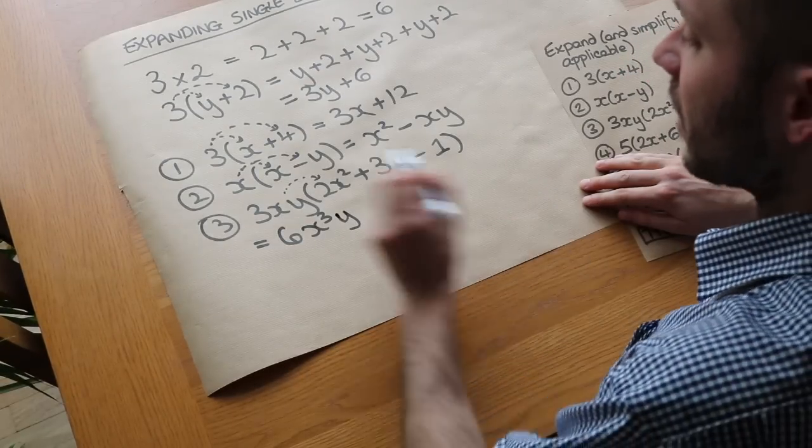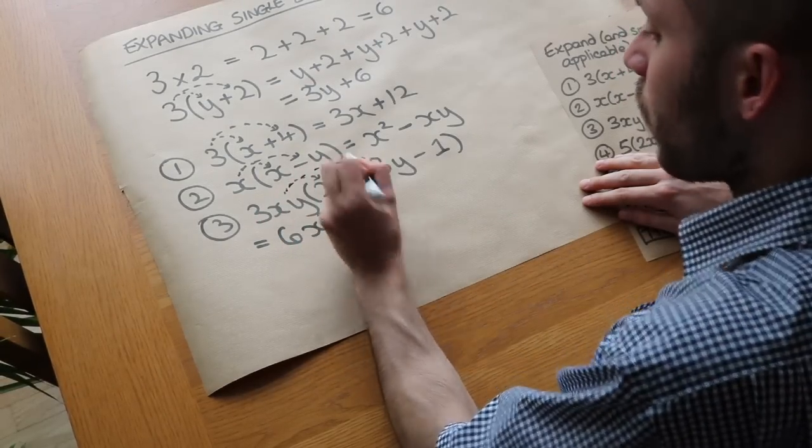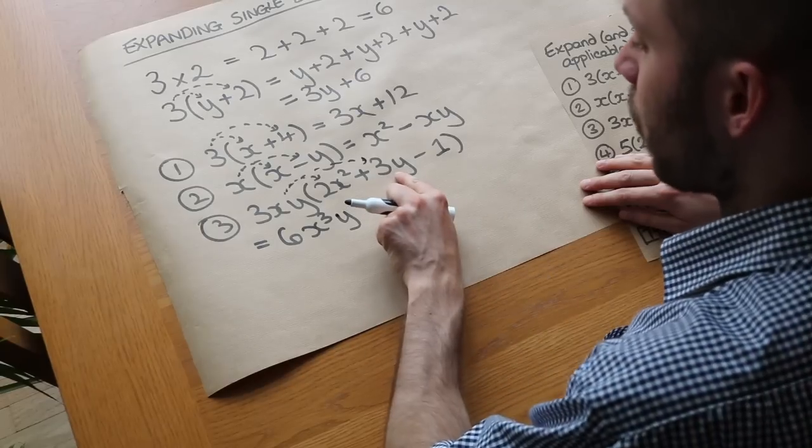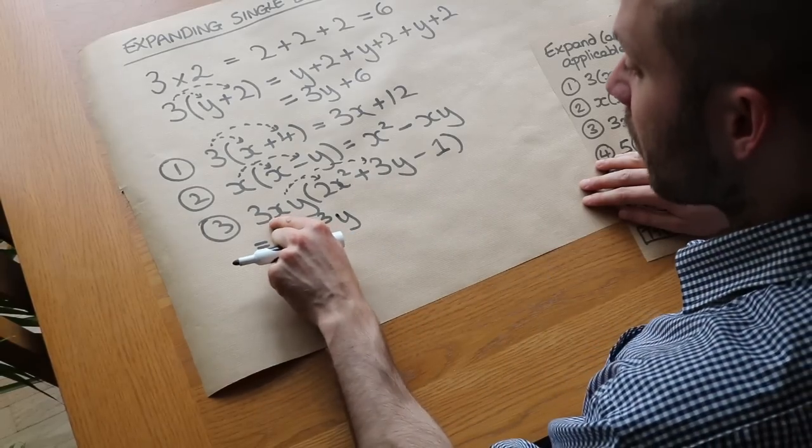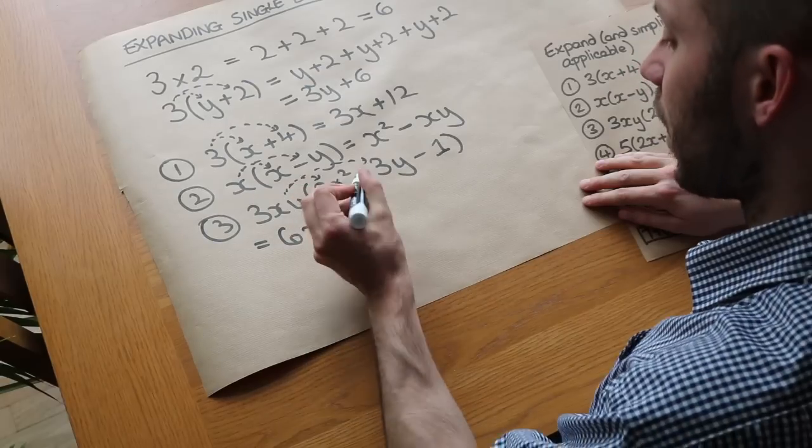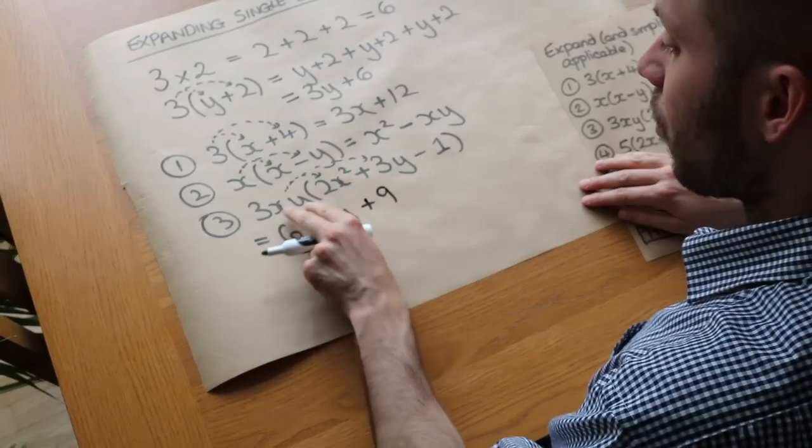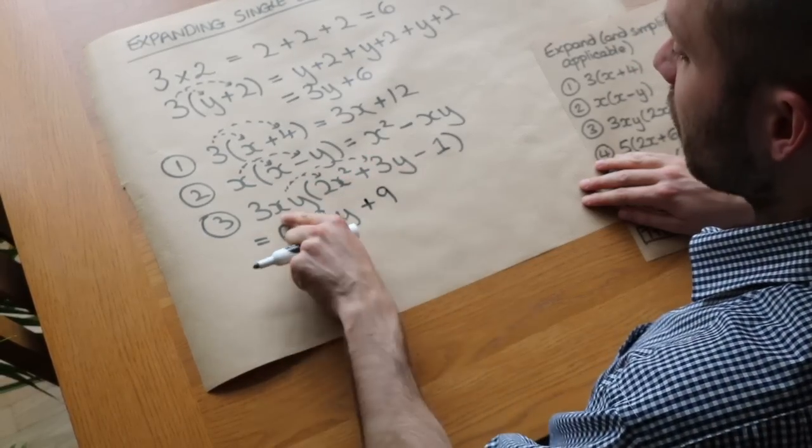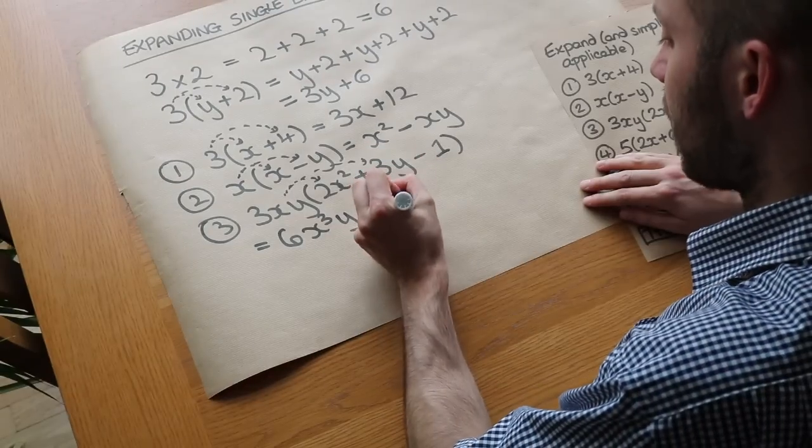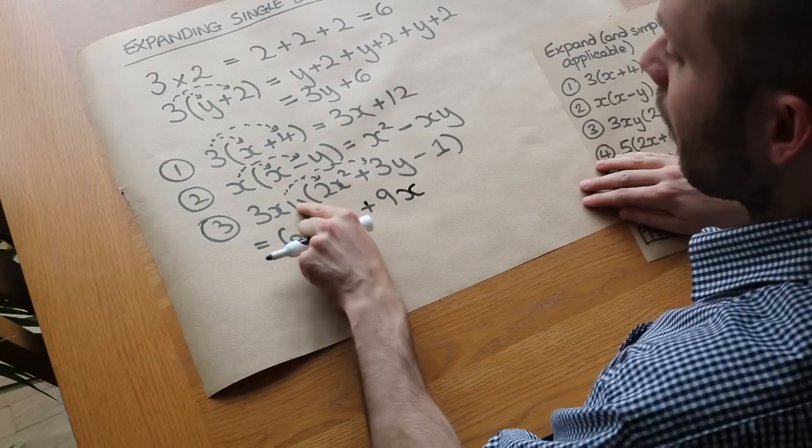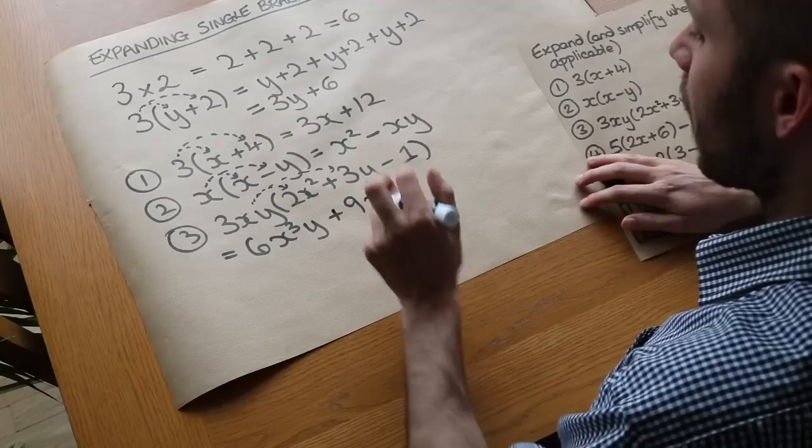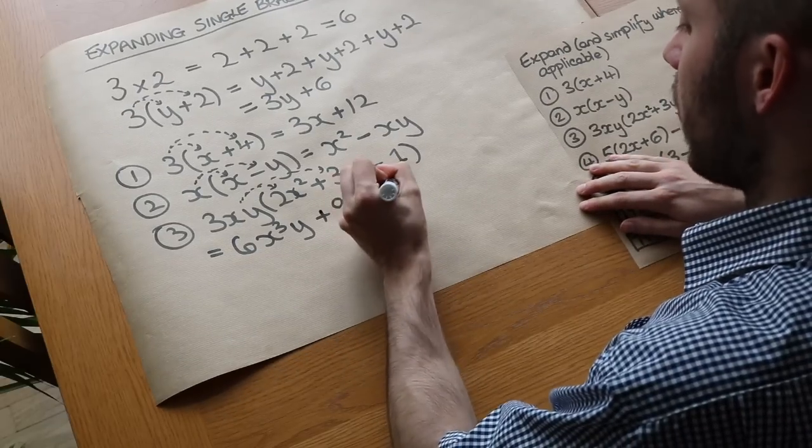Now let's go on to the second term here. We've got 3xy times 3y. As before, let's start with the numbers at the front. We've got 3 times 3, that is 9. And we've got xy times y. So we've got a single power of x, so let's just put the x. I'm going to use an alphabetical order. And we've also got y times y, which we know is y squared.